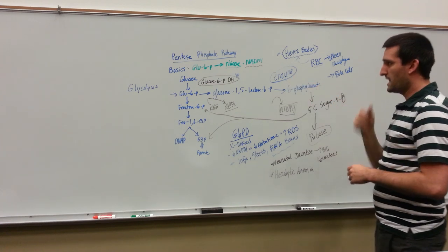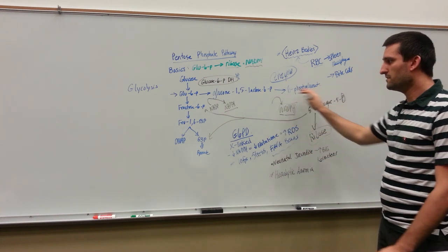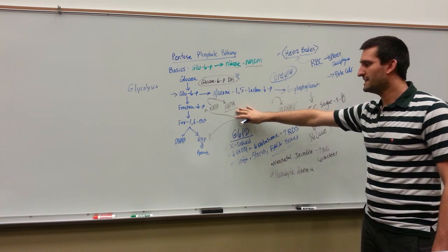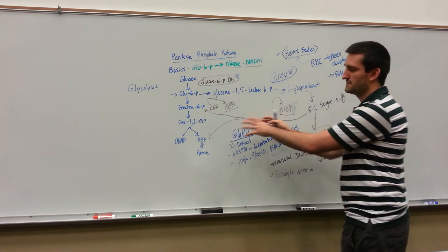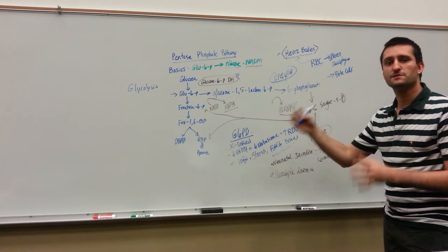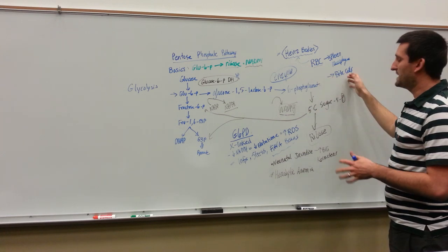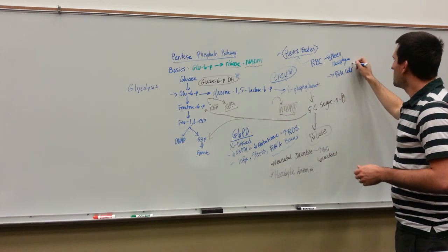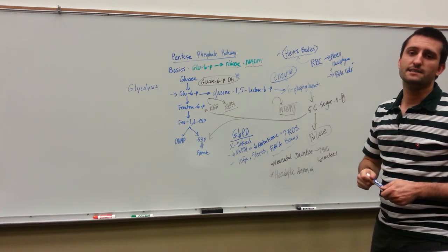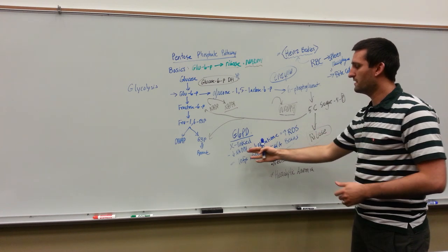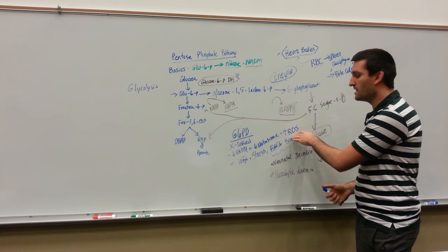So this is the pentose phosphate pathway with a clinical correlate of G6PD. The basics are: we create NADPHs, we create riboses, and if we don't need the riboses, we put the material back into our glycolysis pathway — everything's recycled. Heinz bodies and bite cells are high-yield terms. If a pathologist says you see bite cells under a microscope, think G6PD deficiency, due to not enough NADPH to recycle glutathione and protect against reactive oxygen species.